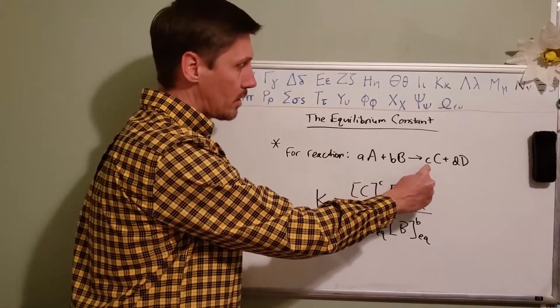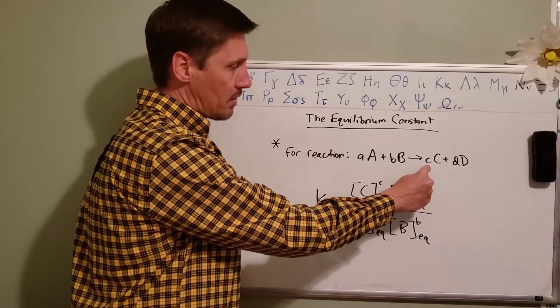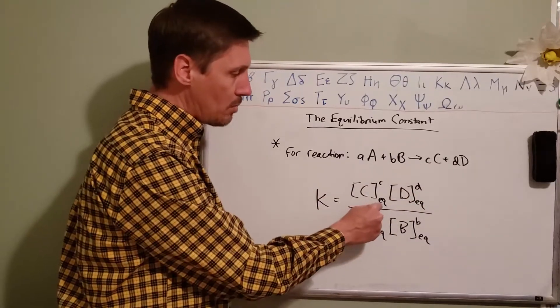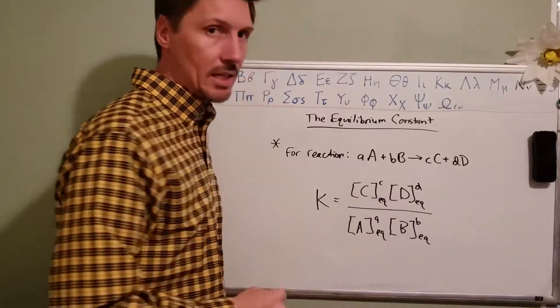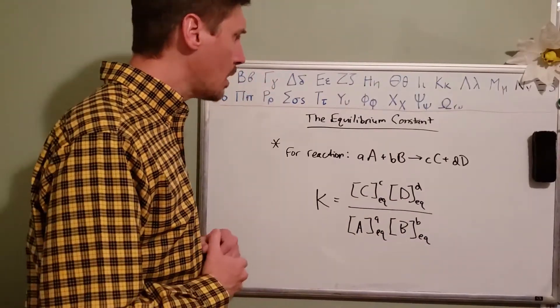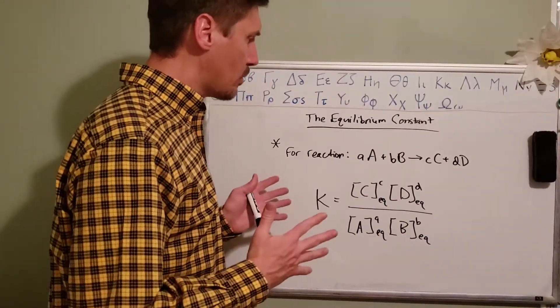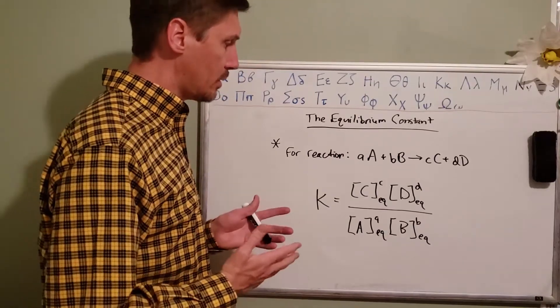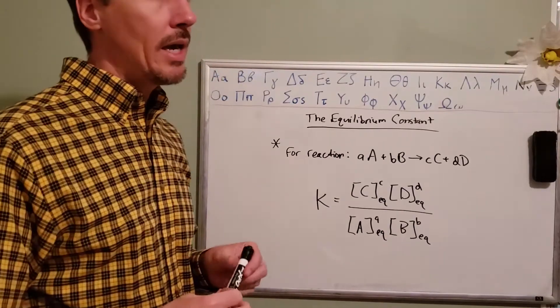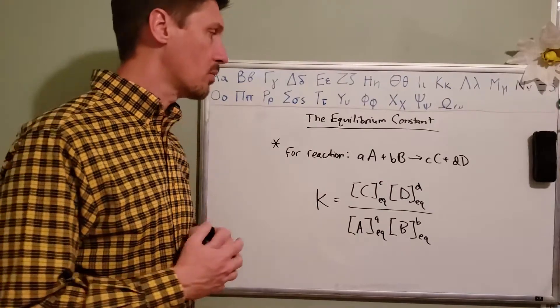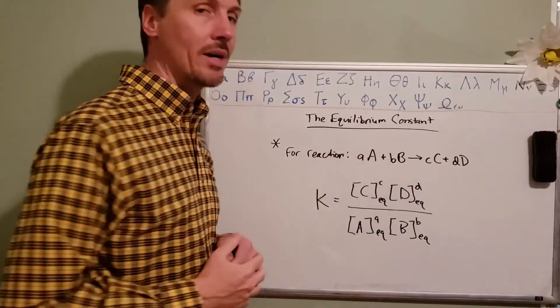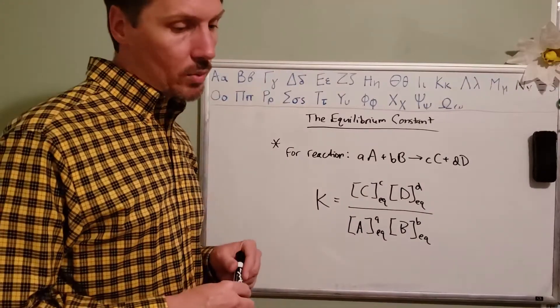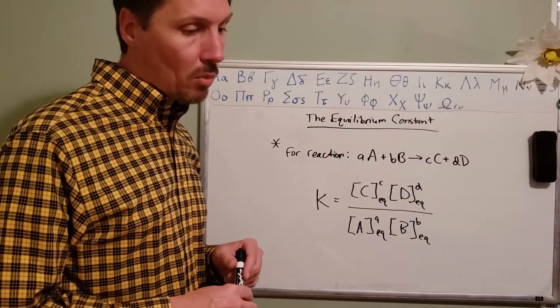Raised to the power of little c, the coefficient in front of C there. The 'eq' means this is the concentration of C at equilibrium. This is the concentration of D at equilibrium. That's the way the equilibrium constant works. If we look at that value, we can instantly know something about the relationship between the concentrations of reactants and products at equilibrium.